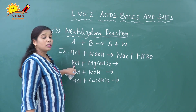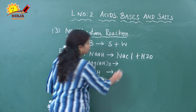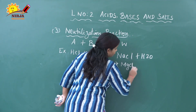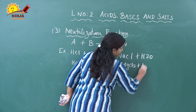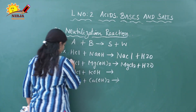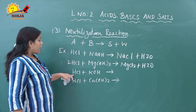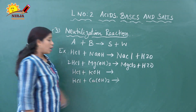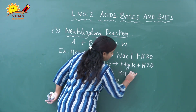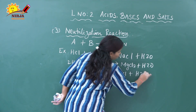The next example: HCl reacts with Mg(OH)₂ to produce MgCl₂ plus water. Next, hydrochloric acid reacts with KOH to produce KCl plus H₂O — potassium chloride and water.